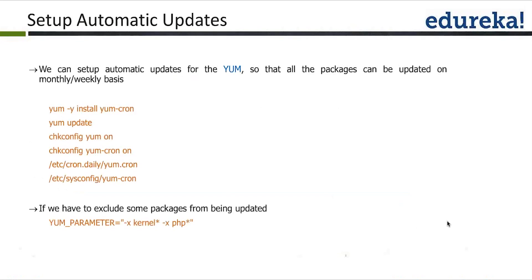Then you run yum update, and use chkconfig yum-cron on to ensure your yum-cron service is running. Use chkconfig to confirm yum-cron is on. That covers the yum-cron setup, and there are two config files you can edit to make changes.